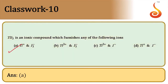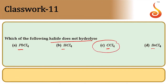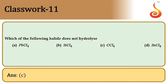Which halide does not hydrolyze? Lead, silicon, and tin have vacant d-orbitals; carbon does not. Therefore CCl₄ does not hydrolyze due to the absence of vacant d-orbitals on carbon. Answer is option C.